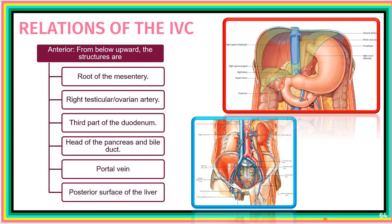The anterior relations of the inferior vena cava include: the root of the mesentery, the gonadal artery (also called testicular or ovarian artery), the horizontal part of the duodenum, the head of the pancreas, the bile duct, the portal vein, and the posterior surface of the liver.